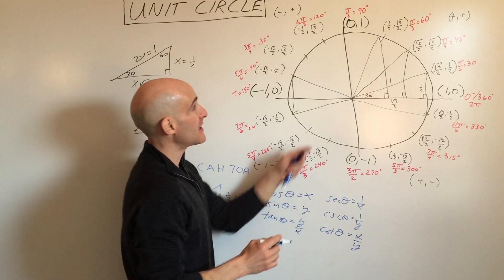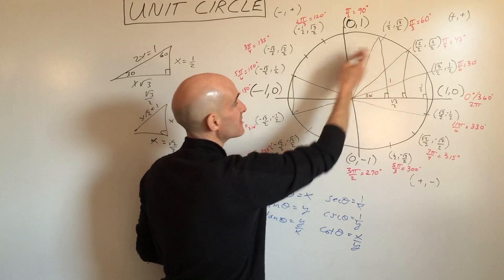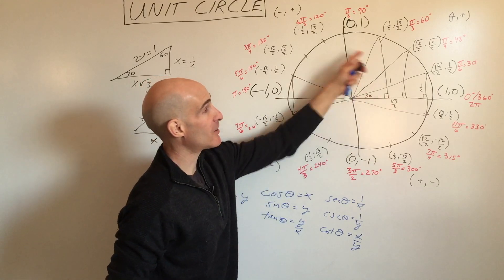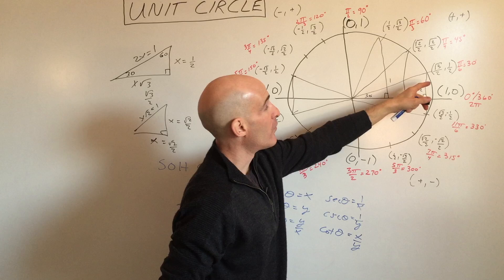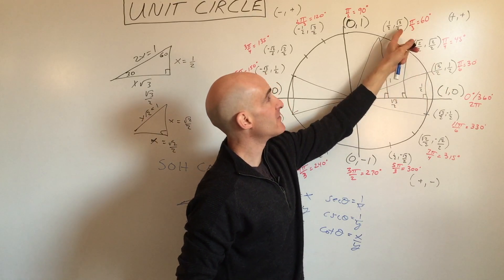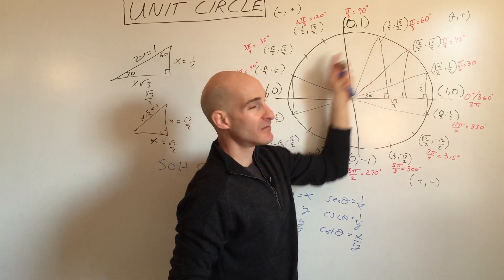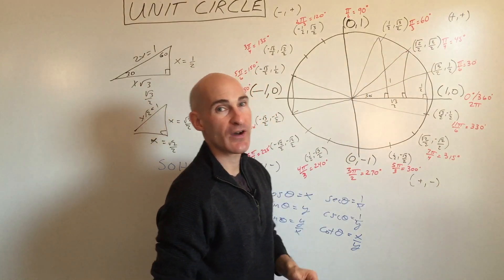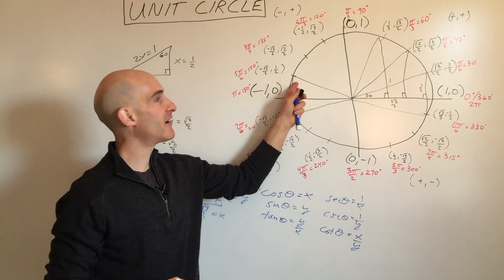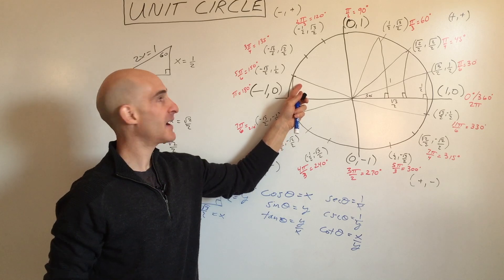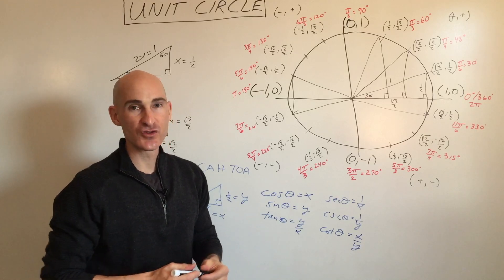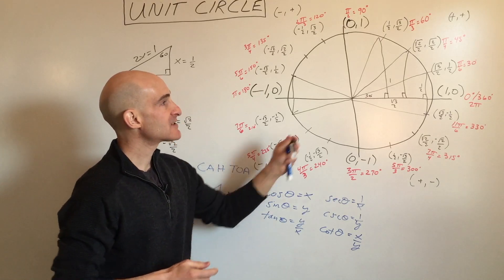This symmetry works the same way for the 45- and 60-degree angles — you can reflect over the x-axis or y-axis to find all the corresponding points in every quadrant. Most students start by memorizing the 30, 45, and 60-degree coordinates, then derive the rest using symmetry. Eventually you'll memorize the entire unit circle just from working with it repeatedly.